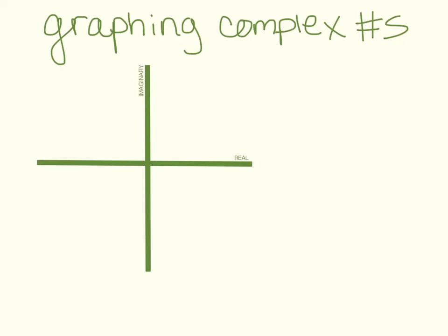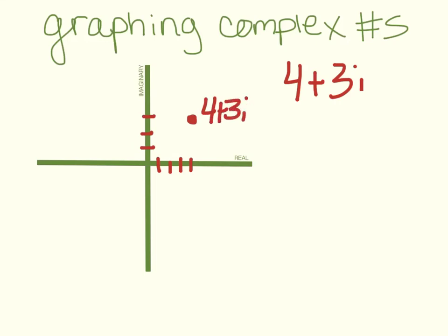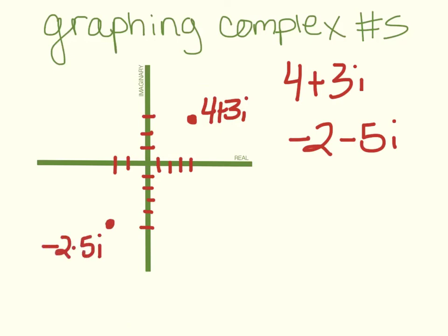We can actually graph complex numbers, but not on the xy coordinate plane — we do it on a real-imaginary coordinate plane. Suppose you had the complex number 4 plus 3i: you would go 4 units on the real axis and 3 units on the imaginary axis and put a point there. Or negative 2 minus 5i: go 2 left on the real and down 5 on the imaginary. For just 5i, you go 0 in the real direction and up 5 in the imaginary direction.